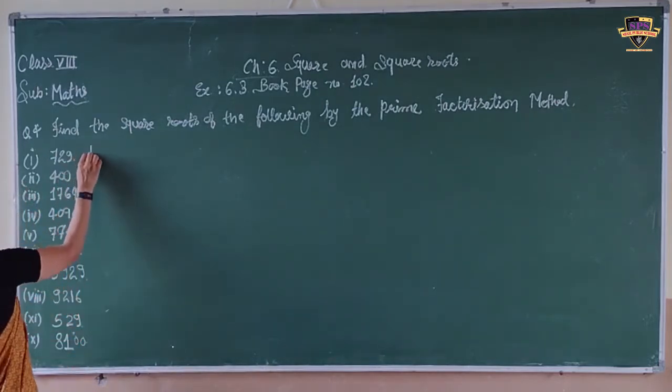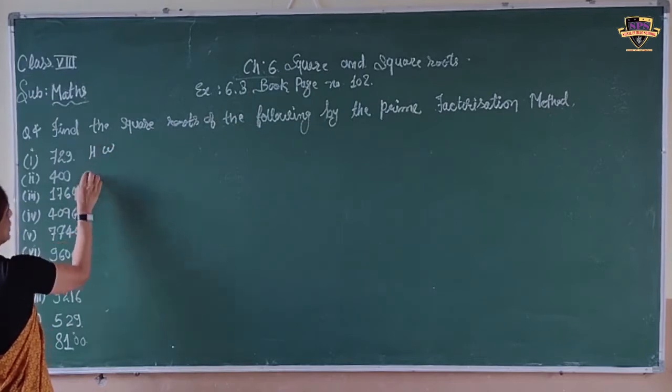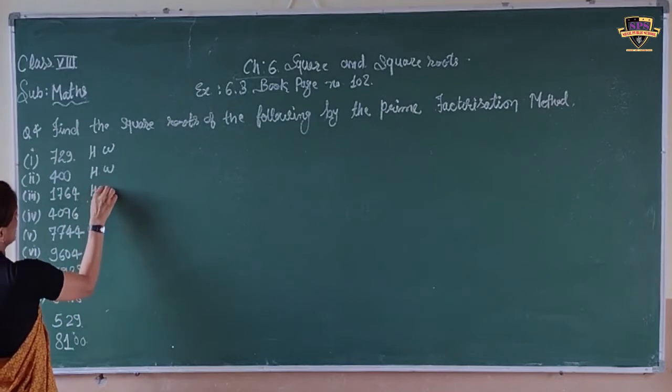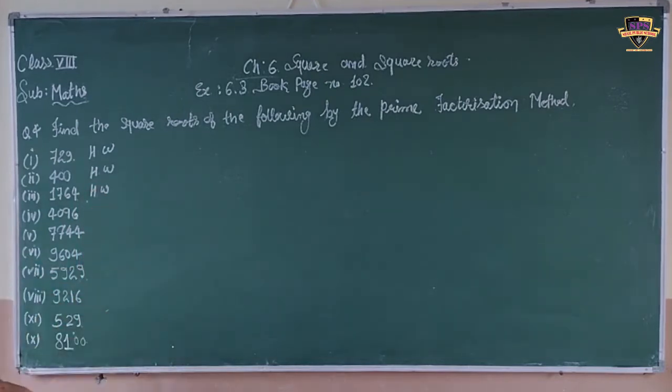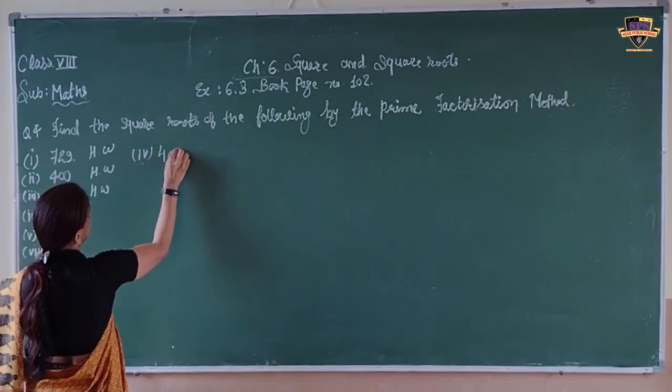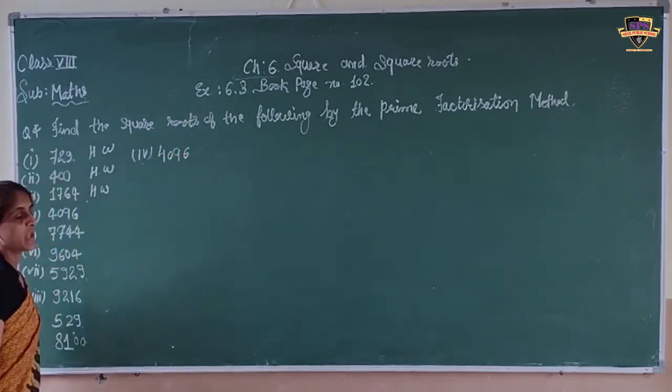First one is your homework. Second, 400, this is also homework. Third is 1764, is also your homework. And now we will start our question number 4, 4096. This is question 4, the number is 4096.